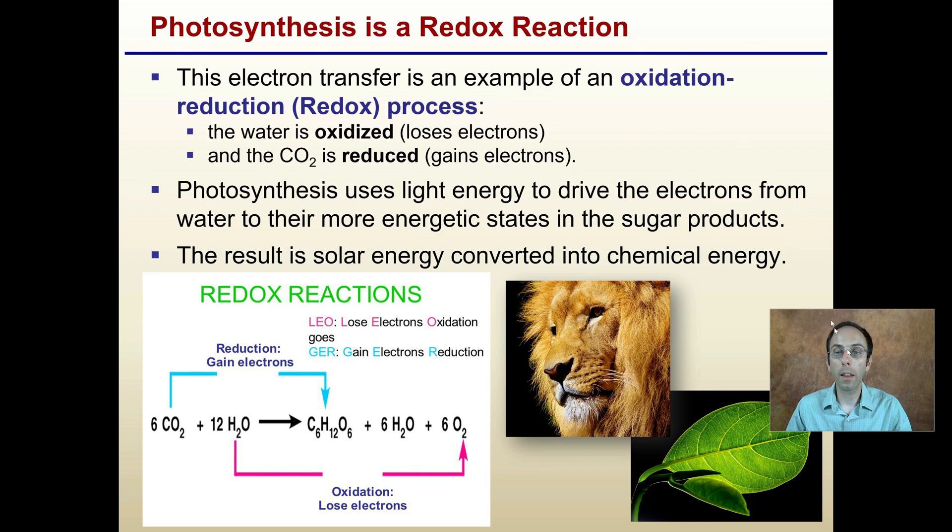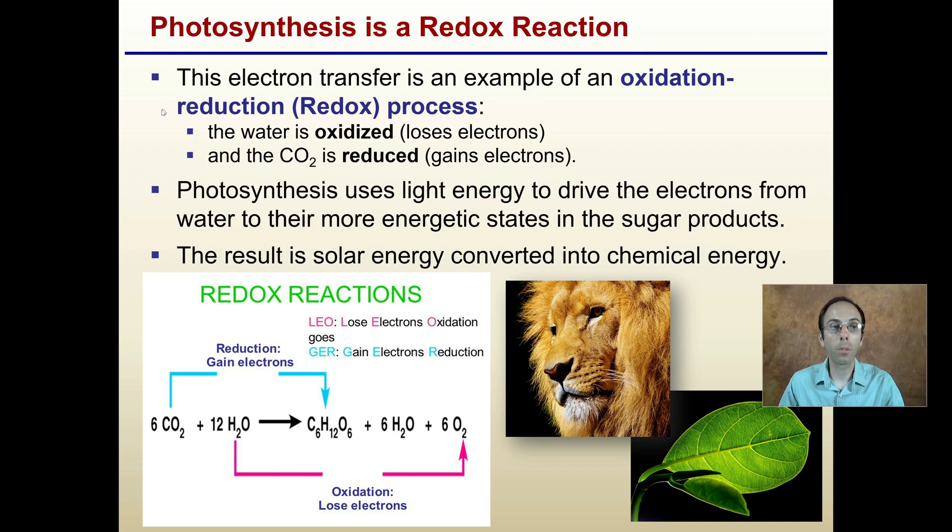We have a simple way to remember this oxidative reduction, redox process. The water is oxidized, meaning it's losing electrons, and the carbon dioxide is reduced, meaning it's gaining electrons. Photosynthesis uses light energy to drive these electrons from water to their more energetic states in the sugar byproducts. The result is solar energy converted to chemical energy.